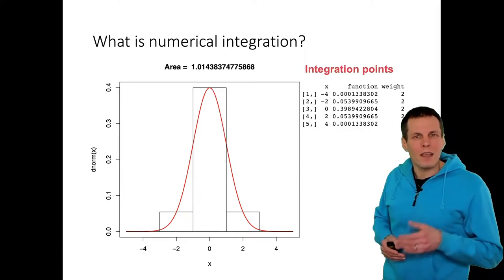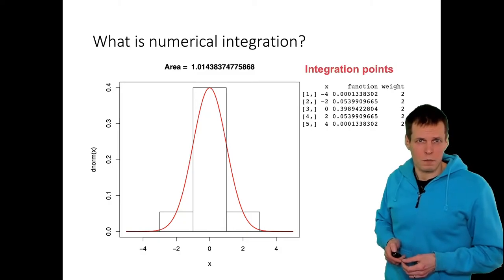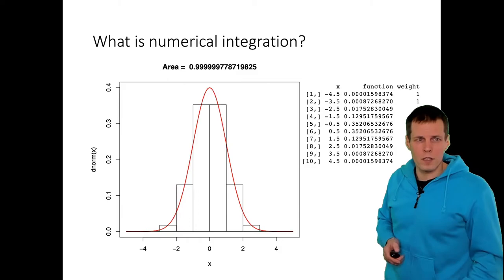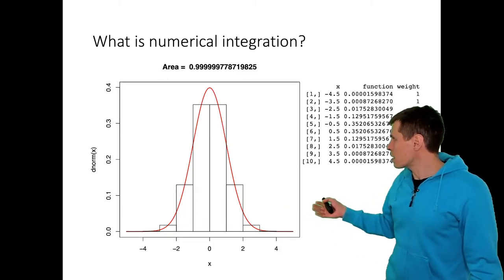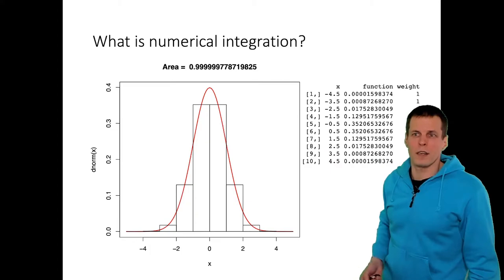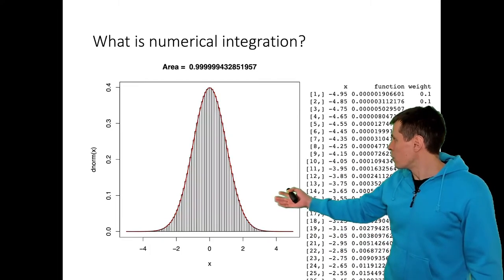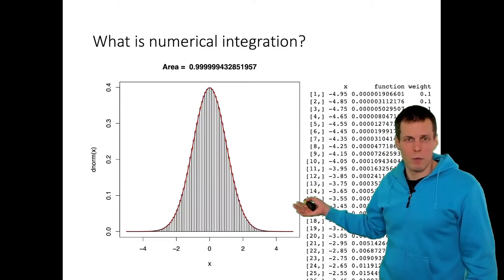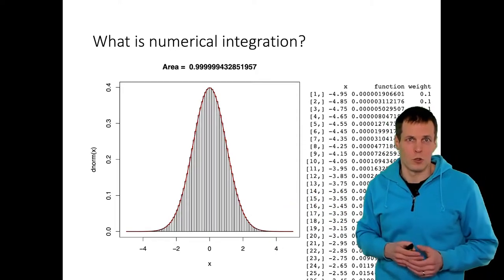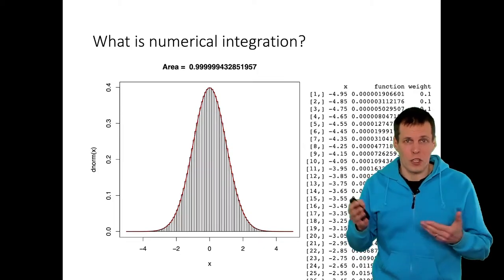These x values are called integration points — here we have five. We can make the integral more precise by increasing the number of points. With 10 points we already get a very precise estimate, and with 100 points we would be well-equipped to approximate almost any kind of curve.